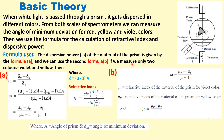In this experiment, white light is passed through a prism and using the spectrometer we have to analyze the spectrum. When white light is passed through a prism it gets dispersed into different colors, and using the spectrometer we can measure the angle of minimum deviation for red, yellow, and violet colors.